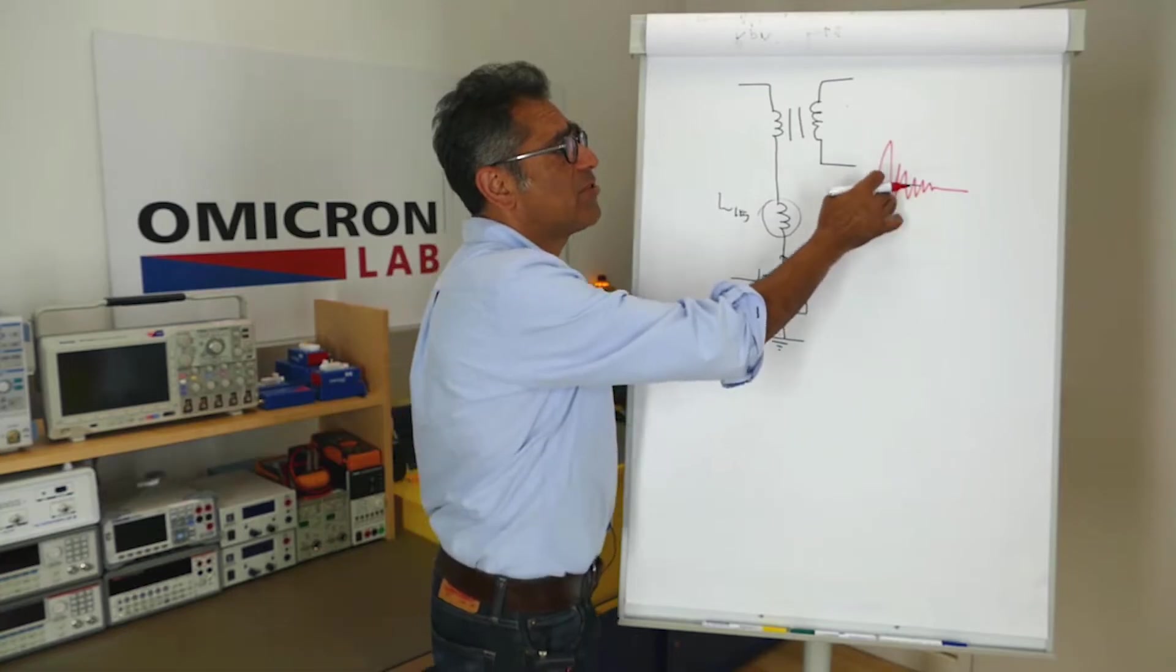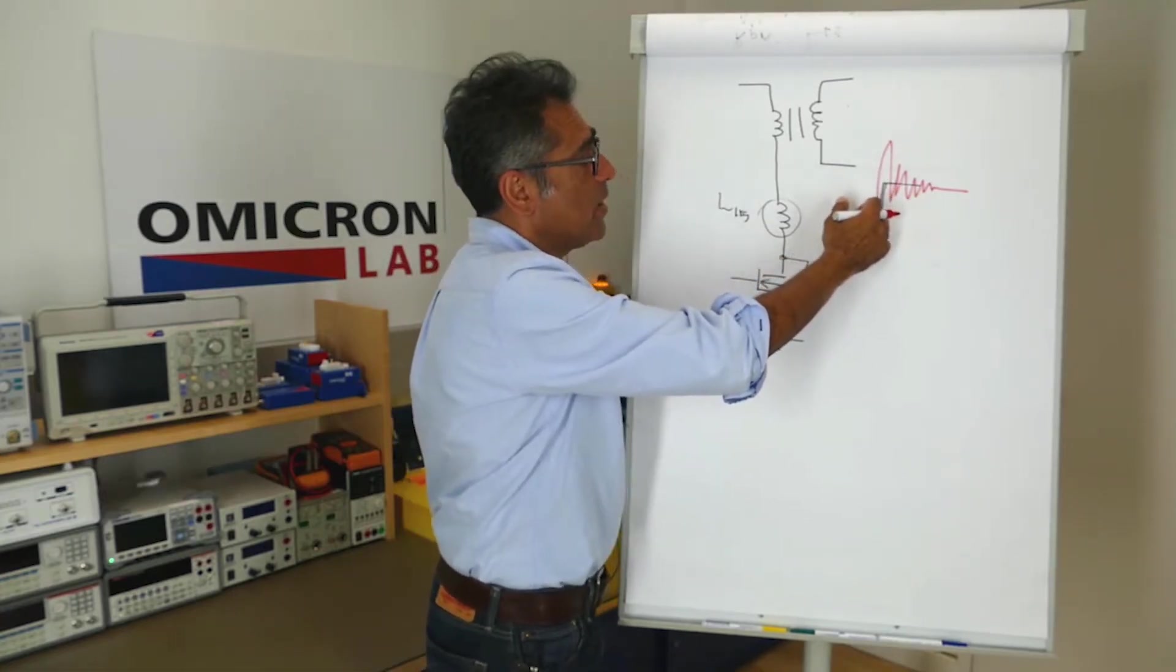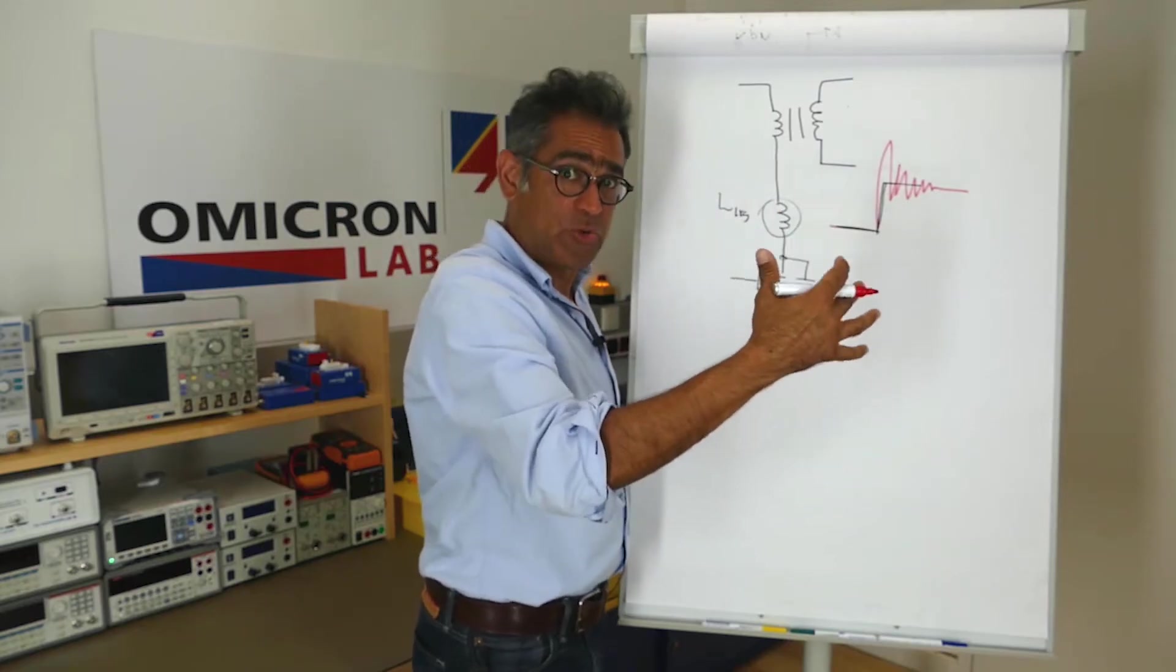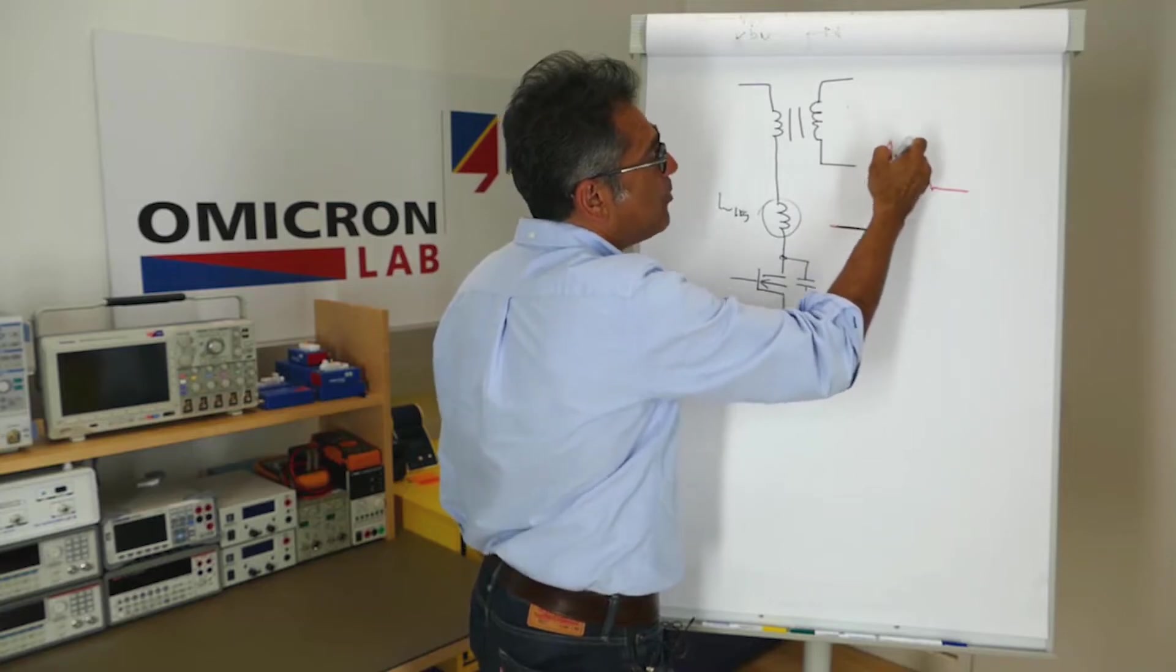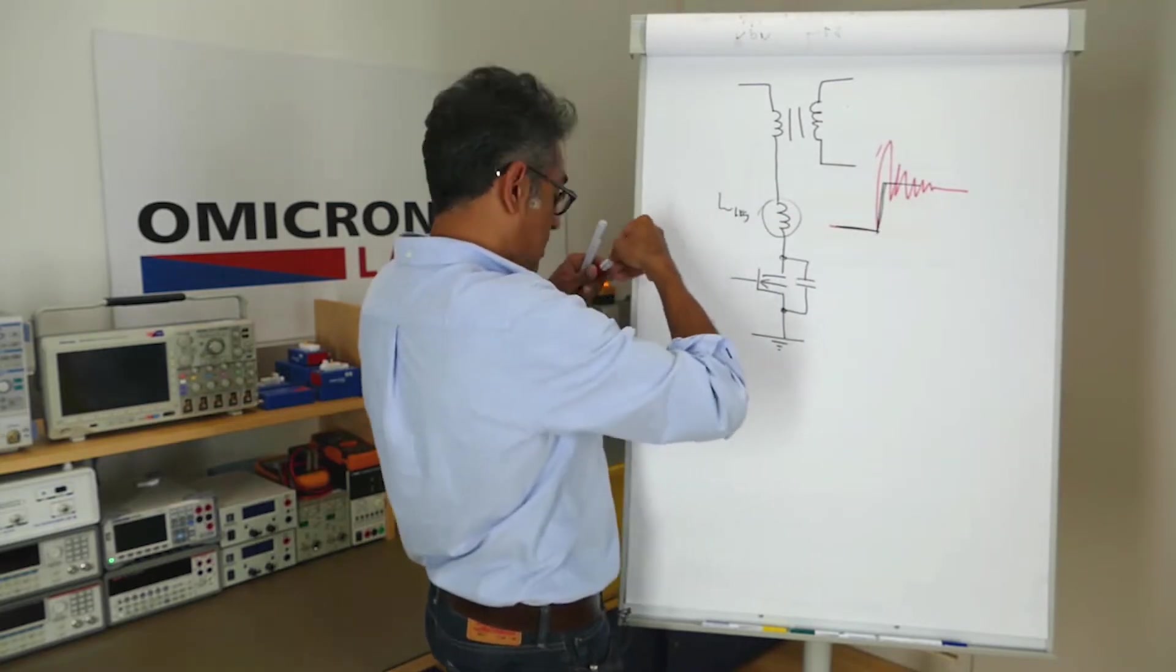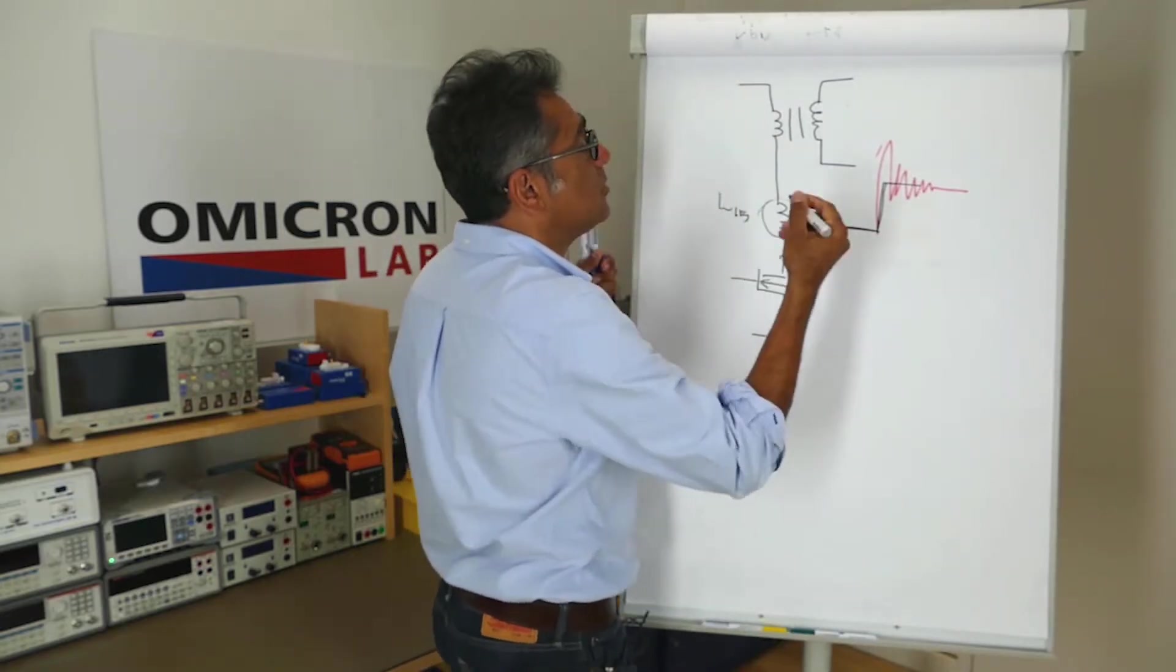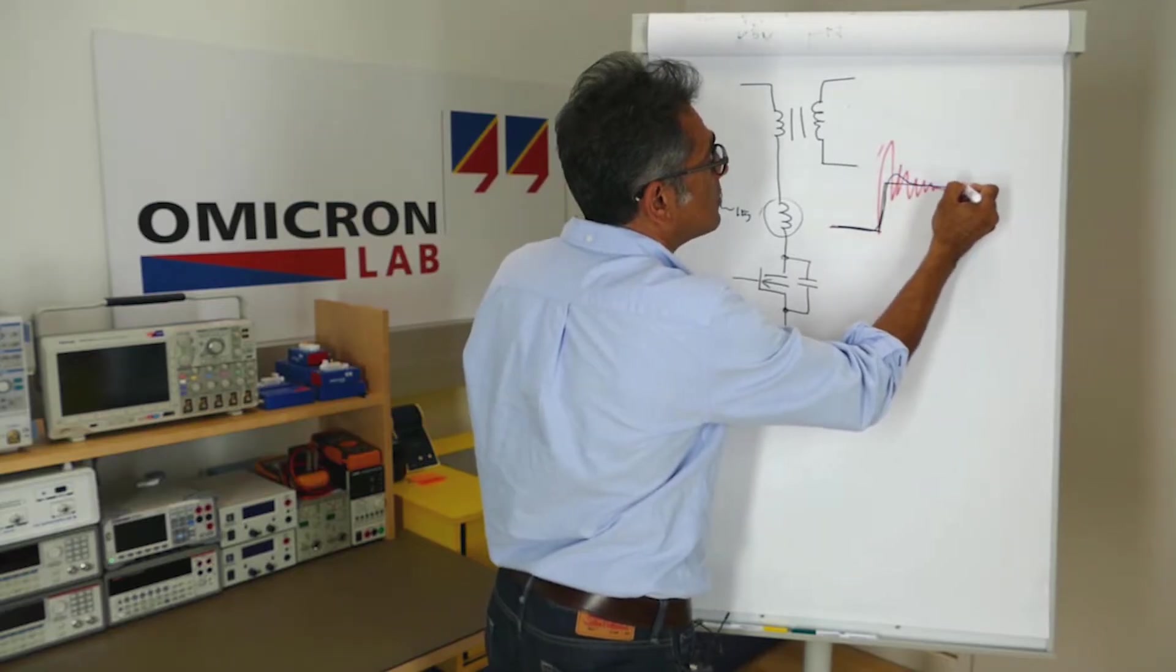Ideally, what we would like to do is get rid of this ringing and we do that with a snubbing circuit or sometimes with a clamp circuit. We talk about that in a different video. And what you try to do is to damp this oscillation so that you get something like, for example, this.